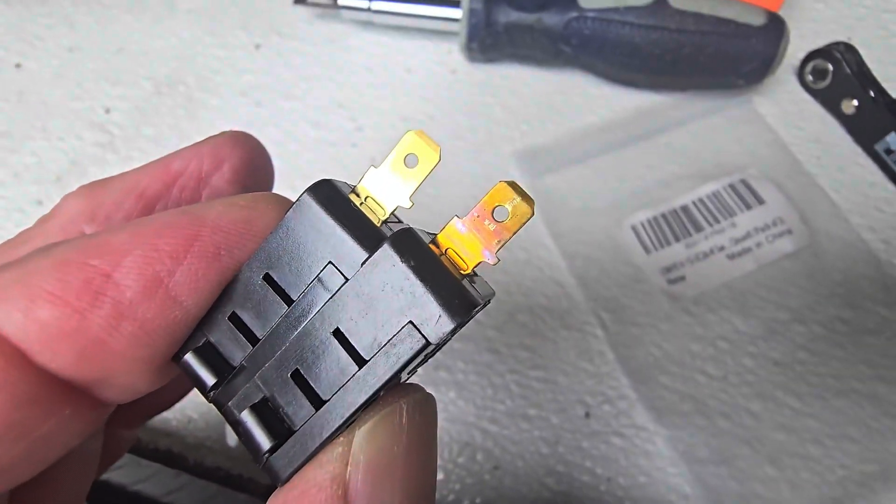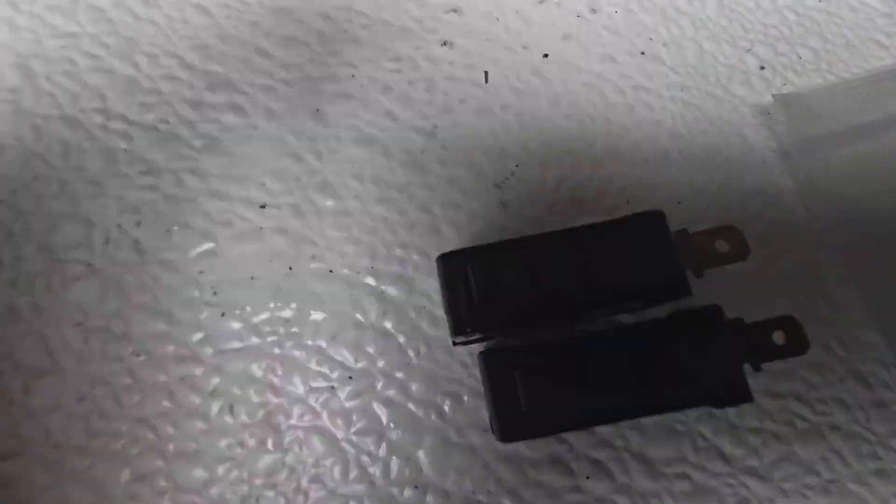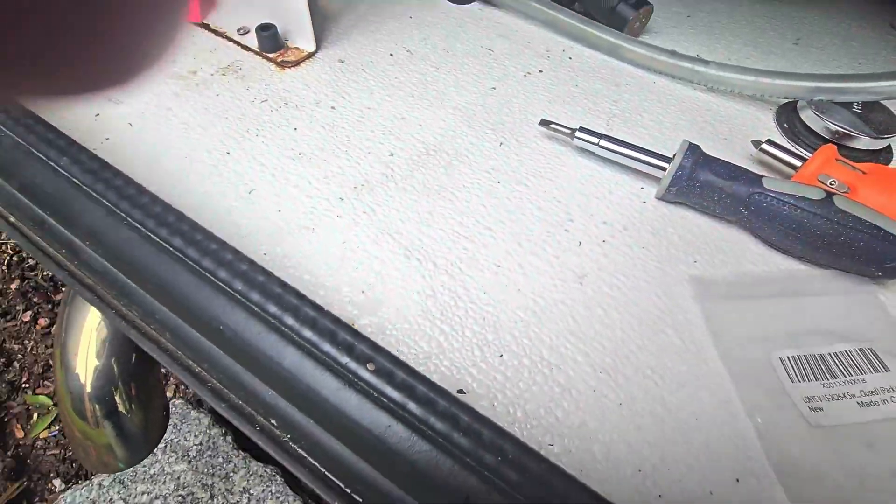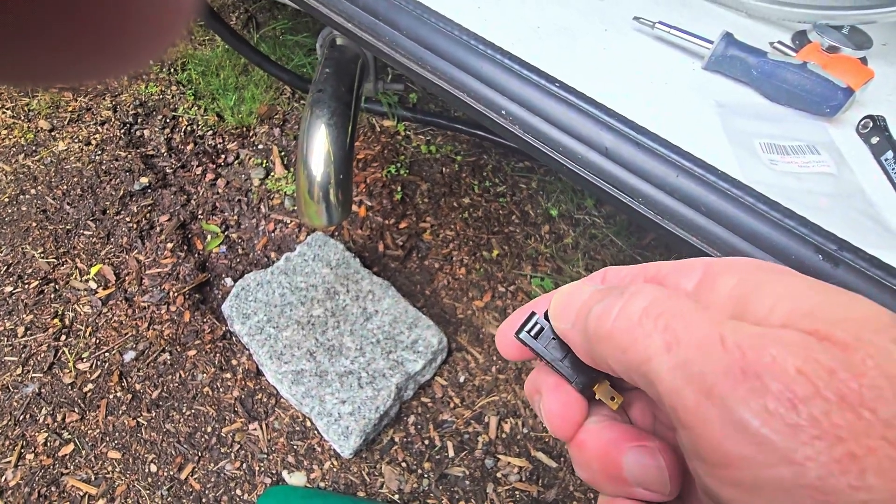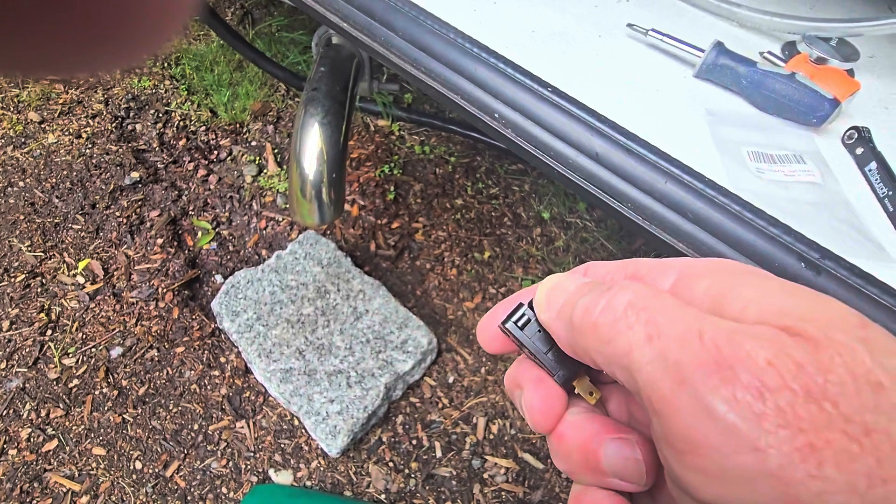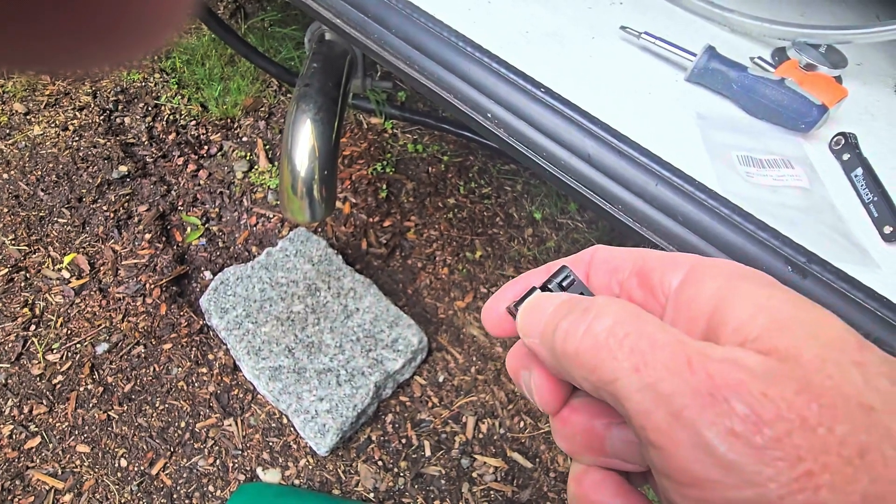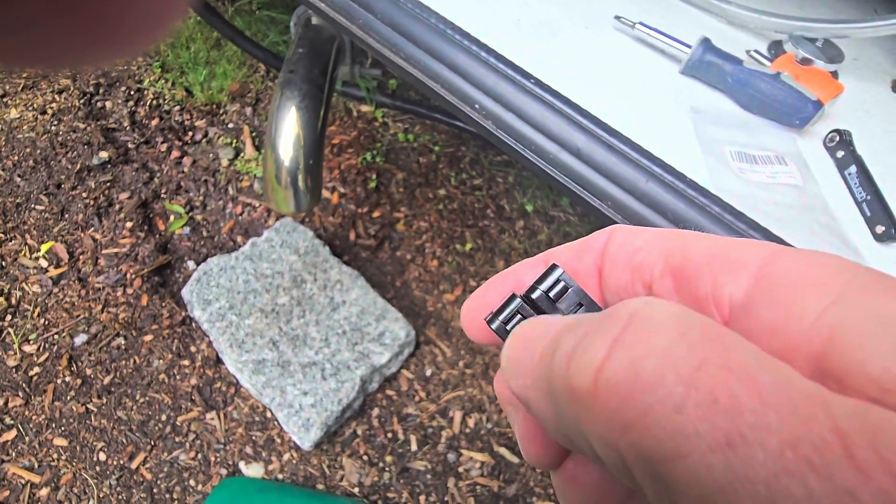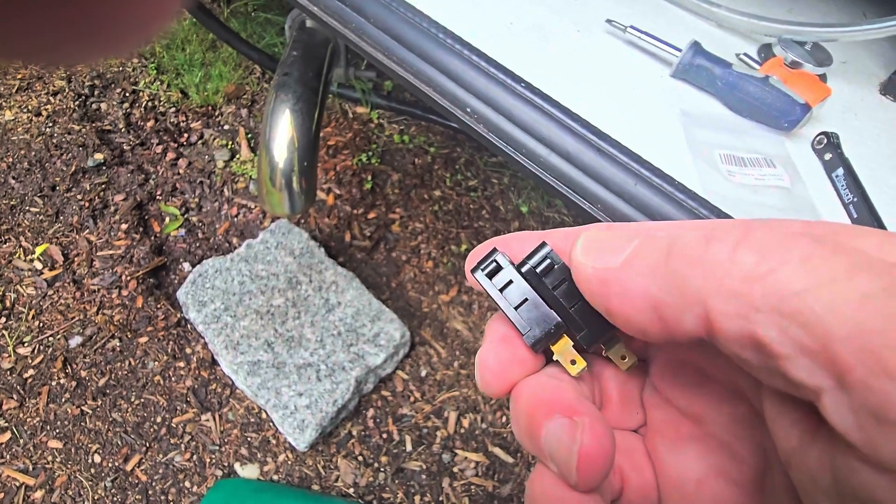Every time the switch opens or closes it arcs. The other thing I noticed is on the new switch, when I press the switch button you can feel a nice firm push and it makes a nice click. On the old switch you can definitely hear it's weaker and it doesn't take anywhere near as much pressure to push it. So obviously the switch is just basically worn out.